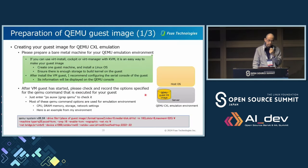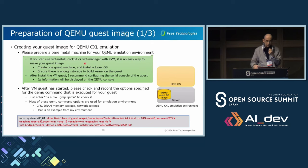Let's prepare the emulation environment. First, you need to make a guest image for QEMU CXL emulation. Please prepare a bare metal machine. If you can use virt-install, virt-manager, or cockpit with KVM, it's an easy way to make your guest image. Create one guest image and install a Linux OS, ensuring there is enough storage to build the kernel on the guest. After installing the VM guest, I recommend configuring the serial console of the guest — its information will be displayed on the QEMU console. After the VM guest has started, pre-check or record the options specified for the QEMU command by running `ps aux` and grepping for QEMU.